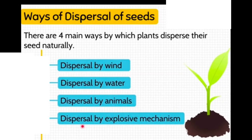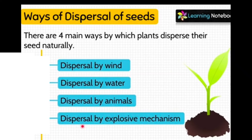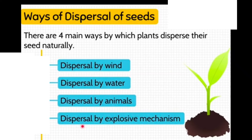There are four main ways by which plants disperse their seeds naturally: dispersal by wind, dispersal by water, dispersal by animals, and dispersal by explosive mechanism.